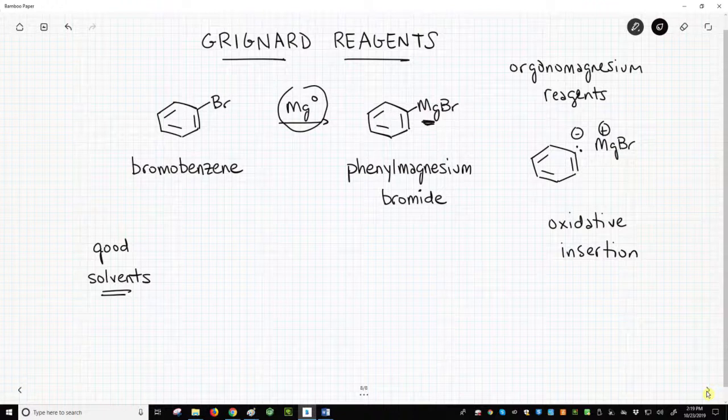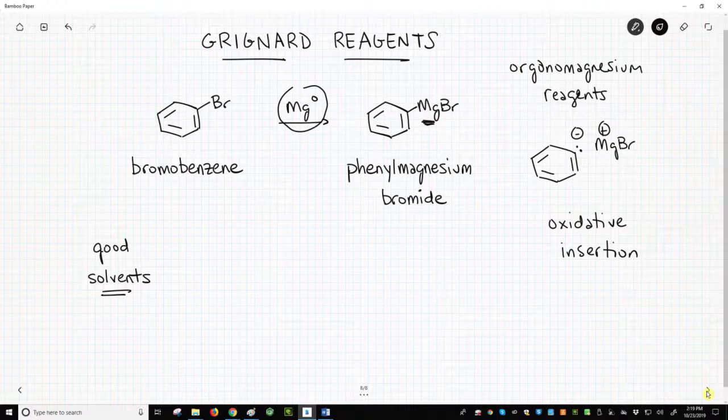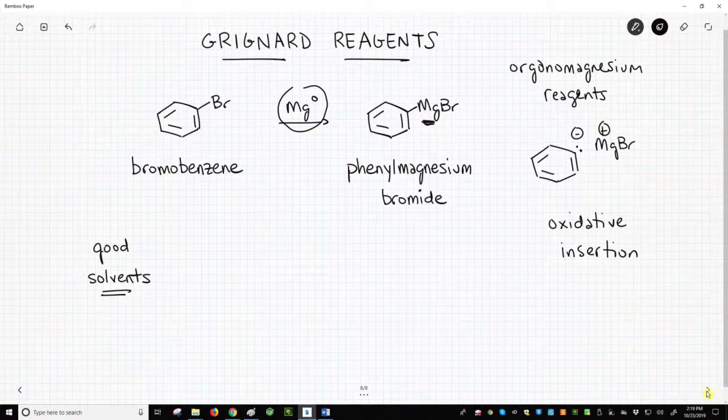Organometallics, including Grignard reagents, tend to be very basic. Therefore the solvents for these reagents need to be very weak acids. The best solvents for these reactions are ethers.